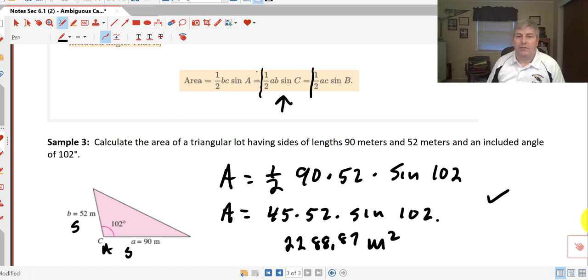So that wraps up our video on finding the area of a non-right triangle using our trig and also the ambiguous case of the law of sines. We'll get some more practice with this when I see you in class.